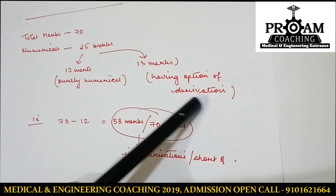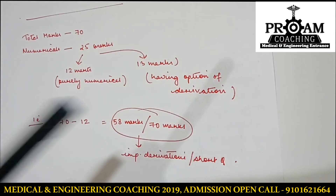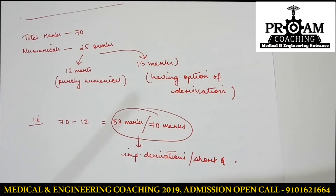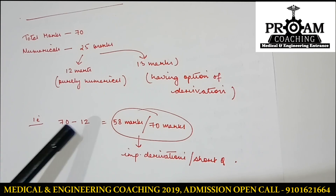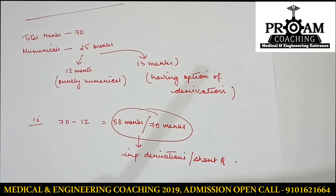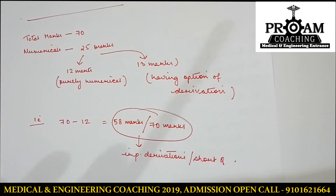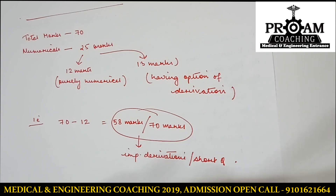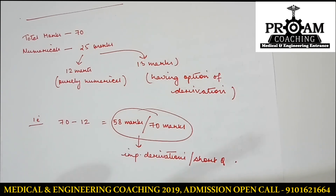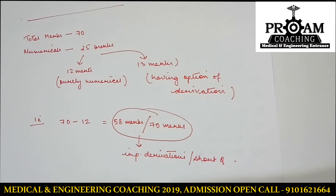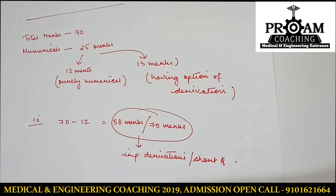The derivation portion is playing a huge role here. So 70 minus 12 is 58 marks — meaning you have 58 out of 70 marks available for important derivations as well as important short questions. No doubt you have to focus on numericals, but I'm taking the example of students who have not completed the full syllabus but want to get more marks.